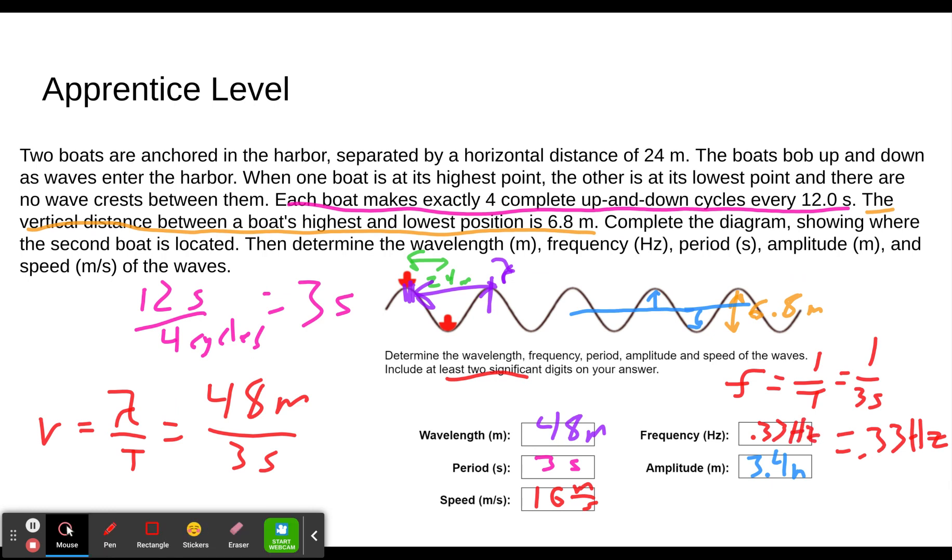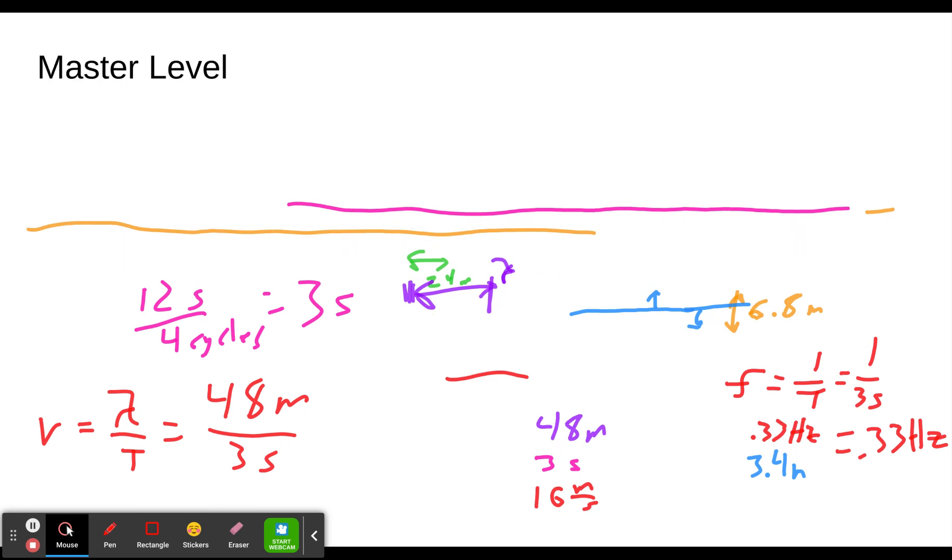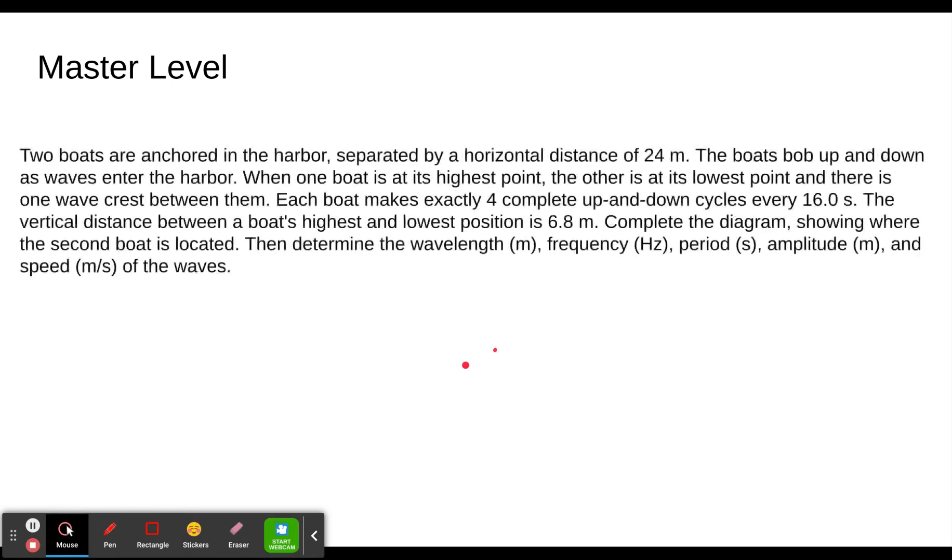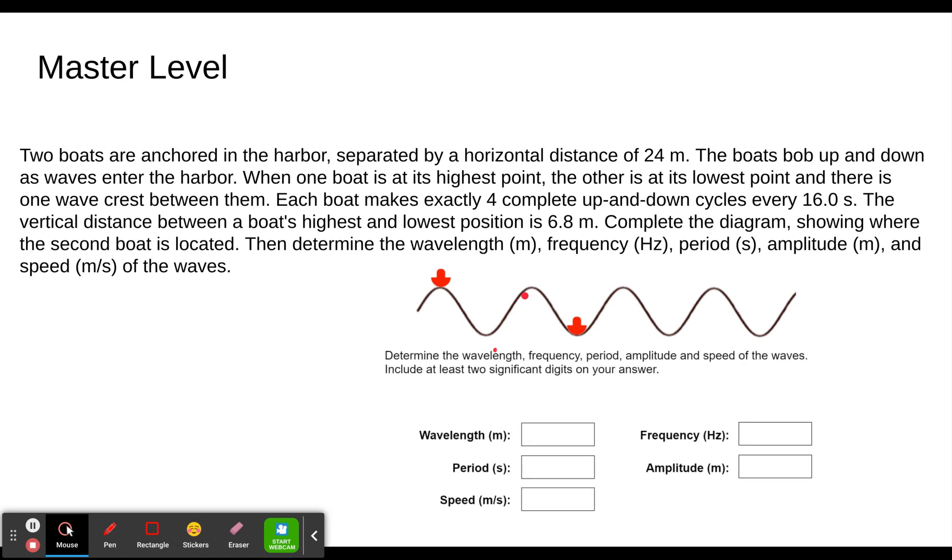Let's go through these a little bit more quickly on the next two levels. So master level is next. Let me clear the screen here. Two boats are anchored. Notice everything's the same. You'll get different distances here, just happen to be using 24 again. This time, one boat is at its highest point, and the other is its lowest point, and there is one wave crest between them. So that would look like this. So lowest point, there's another crest. So that's the one that's in between them, and then it's at its lowest point.